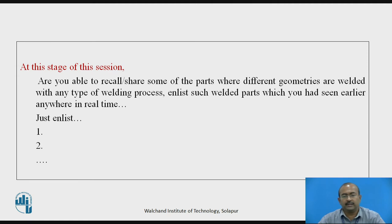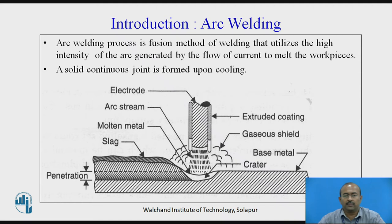Let us go with the introduction of arc welding. Arc welding is a fusion method of welding that utilizes the high intensity of arc generated by the flow of current to melt the work pieces; a solid continuous joint is formed upon cooling. In the conceptual figure shown, you can see the base metal where a gaseous shield is formed due to the burning of flux coated on the electrode. A crater is formed because of the arc produced between the torch tip and the base metal, and after solidification, a slag layer as well as a solidified molten mixture layer can be seen.